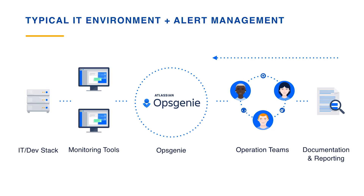In a typical environment today with an alert management stack, we have an IT DevStack with a monitoring tool such as New Relic that sends alerts to Opsgenie. Opsgenie can figure out what to do — whether to suppress notifications, alert a team right away, or wait 10 minutes. Opsgenie is the central pane of glass for all alerts routed to operations teams, and can report on that data and provide documentation on how to better resolve incidents moving forward.